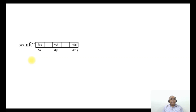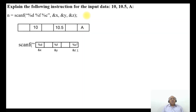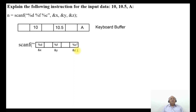Suppose you have scanf("%d %f %c", &x, &y, &z) and the input data is 10, 10.5, and a. The value 10 corresponds to %d, 10.5 corresponds to %f, and a corresponds to %c. These values are entered into the keyboard buffer, and the format specifiers convert them to the appropriate types for the memory locations &x, &y, and &z.